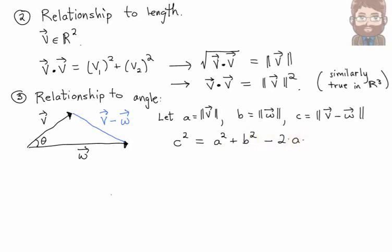Something called the law of cosines. This is true for any angle. C squared is equal to A squared plus B squared minus 2AB cosine theta. It's the law of cosines.